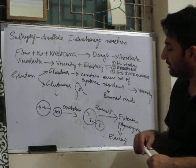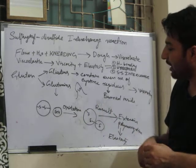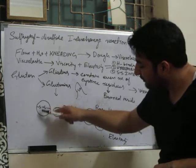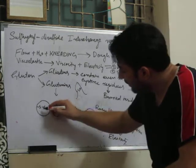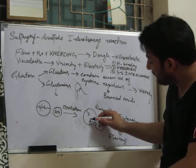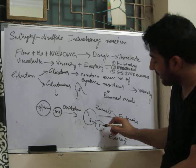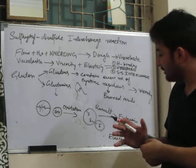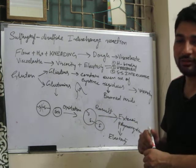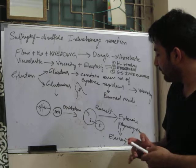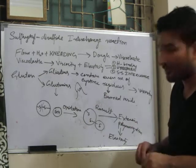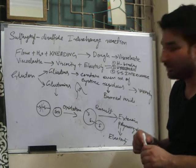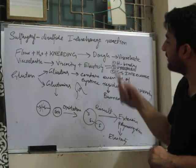When we knead the flour with water, oxidation occurs, and due to which this bond gets broken down. And this sulphur forms a new bond with the free SH group, which causes the extension of the polymer chain. Due to this there is extensive polymerization, which leads to the elastic nature of the dough. This was all about the sulphide disulphide interchange reaction.